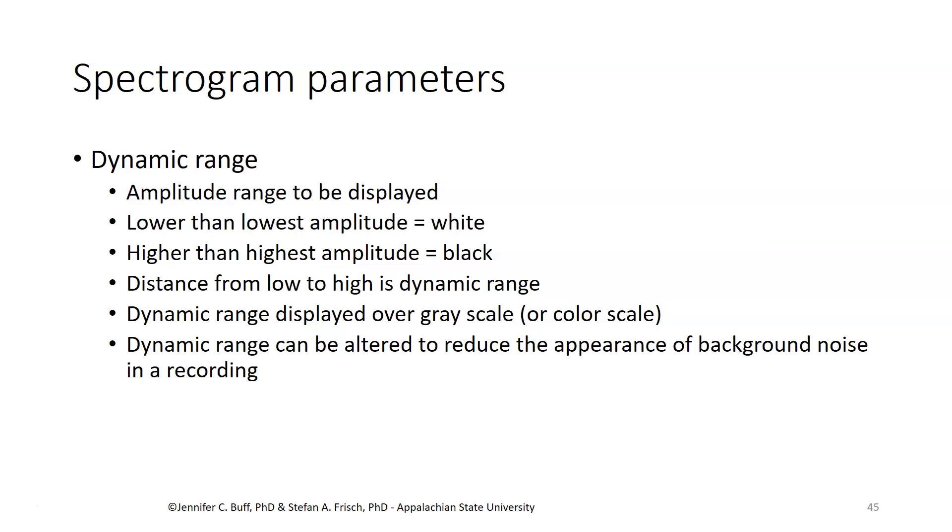The display of amplitude in a spectrogram is called the dynamic range. If you're going to use a scale from white to black with gray in between, you have to decide the quietest sound you're going to show. Anything that's quieter than that is going to be completely white.